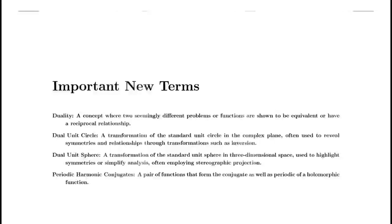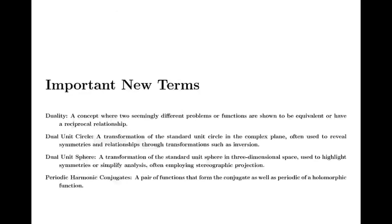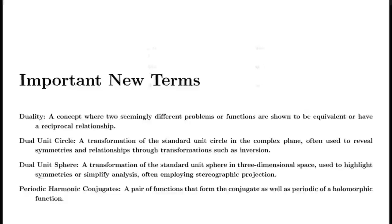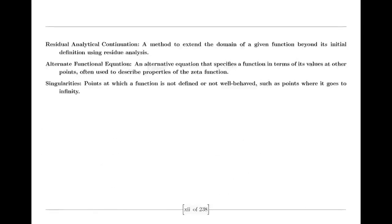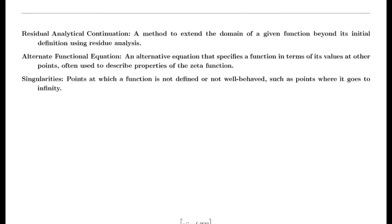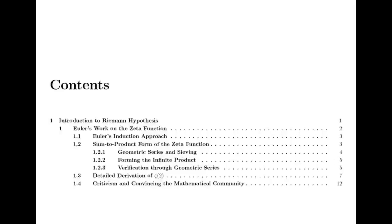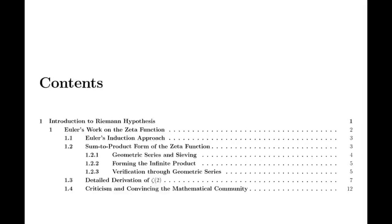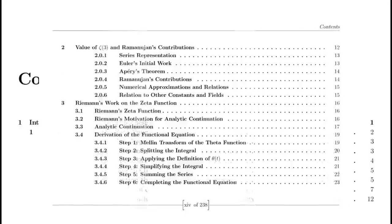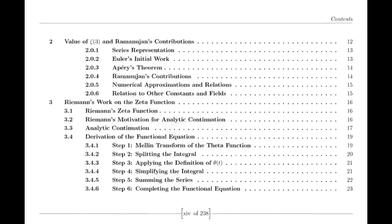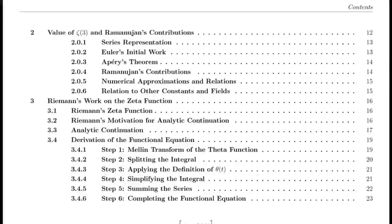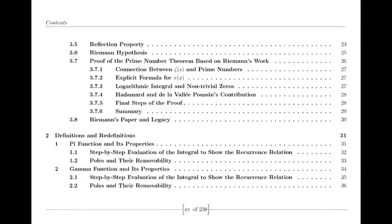Riemann's Analytical Machinery. Moving to the 19th century, we encounter Bernhard Riemann, who expanded our understanding of complex functions. Riemann introduced the concept of analytic continuation, which allowed for the extension of functions beyond their initial domains. For example, he extended the Riemann zeta function — initially defined only for complex numbers with real parts greater than 1 — to the entire complex plane except s equals 1, where it has a simple pole. This was a crucial advancement in complex analysis.